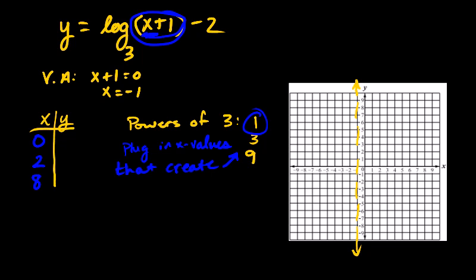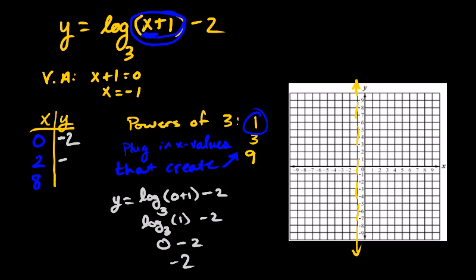Now to find the y values, you're probably going to want to use some scratch paper off to the side. So we are going to have to just manually plug these things in. So y equals log base 3. And I plug in 0 plus 1. Then minus 2. So this is log base 3 of 1 minus 2. And then what's the log base 3 of 1? That's 0. Then minus 2. So it's negative 2. So my point is 0, negative 2. When you plug in 2, you get 3 on the inside. So the log base 3 of 3 is 1. And 1 minus 2 is negative 1. When you plug in 8, you get 9 on the inside. So the log base 3 of 9. That exponent would be 2. And so 2 minus 2 is 0. You've got 3 points.